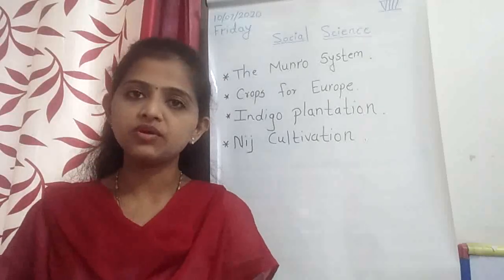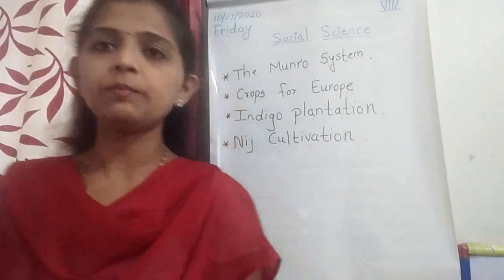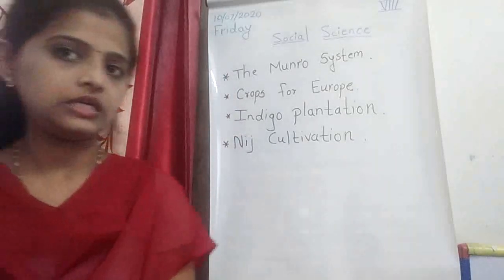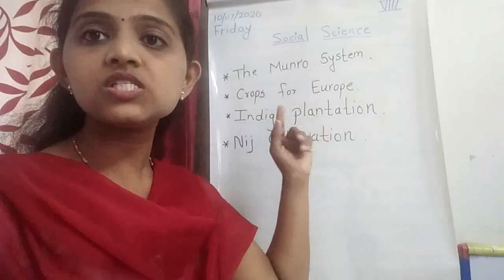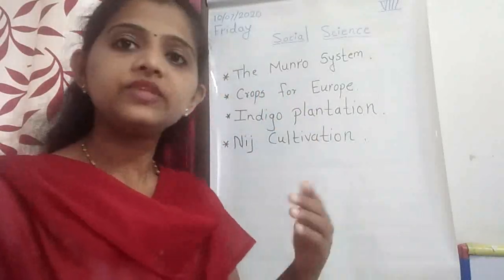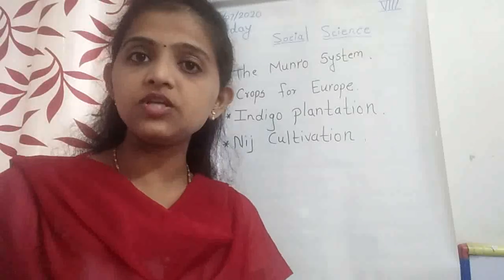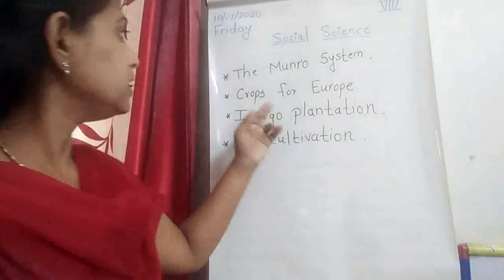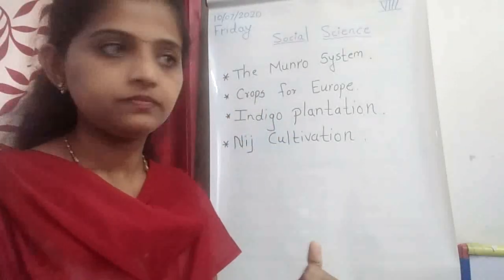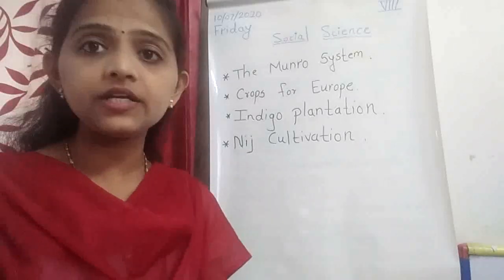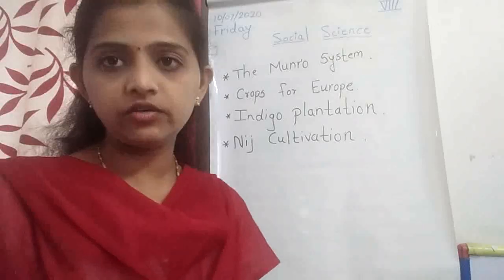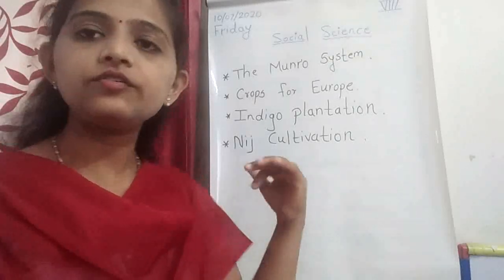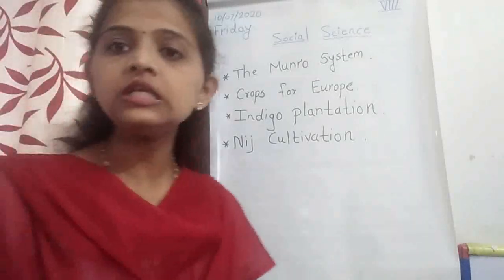Now in the second part, which things are we going to learn? First, the Munro system — what it is, how it was established and by whom. Then, crops for Europe. Then, indigo plantation. And next, Nij cultivation. These are the points we are going to cover in this chapter.